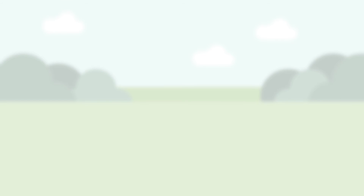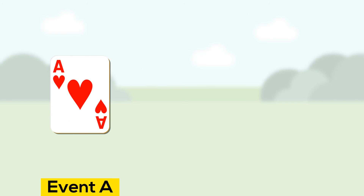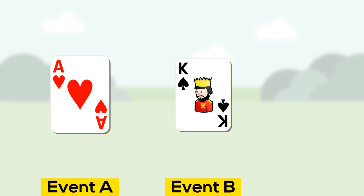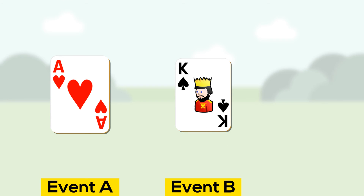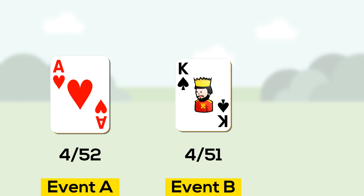For example, what's the probability that you'll draw an ace, hold onto it, and then draw a king? We'll start with the probability of drawing an ace — four out of 52 cards are aces. Then we calculate the probability of drawing a king given that we've already drawn an ace, which is different than drawing a king from a full deck. There are four kings left and 51 cards remaining, since we're holding onto an ace.